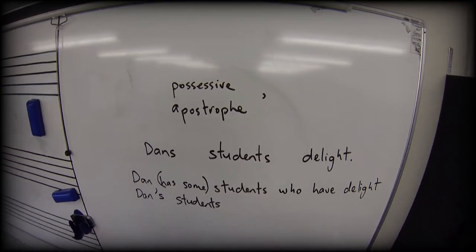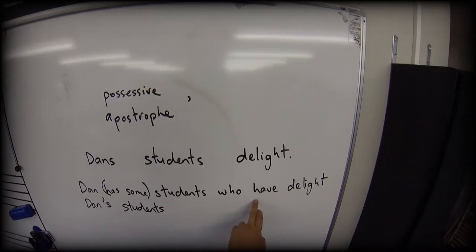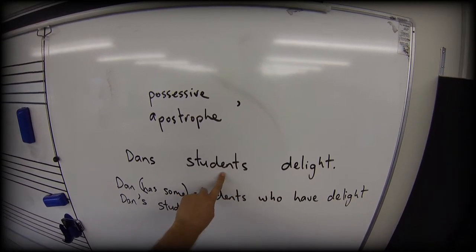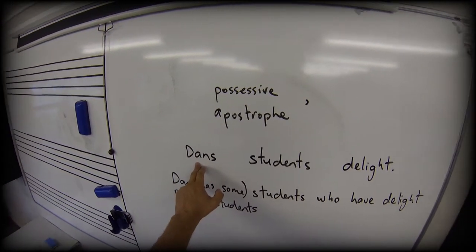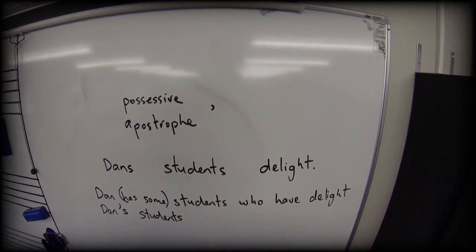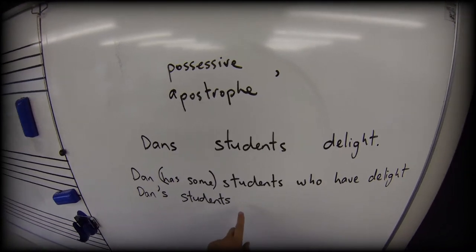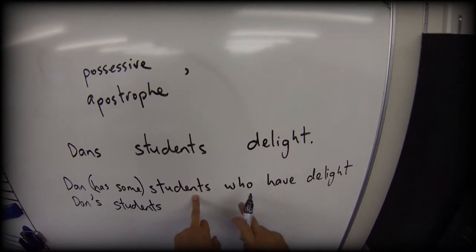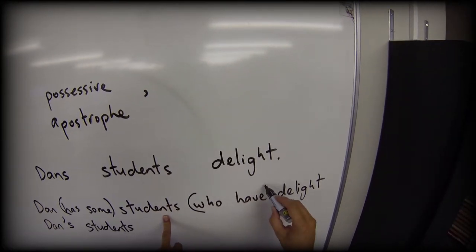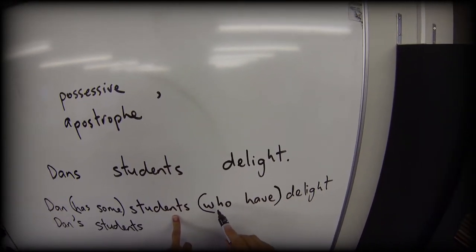Right. The students who have delight. Ah, this is something - the delight belongs to the students. The delight does not belong to Dan. The delight belongs to the students. So I can talk about students who have delight. So again, same process, I'm going to remove this idea of 'who have.'